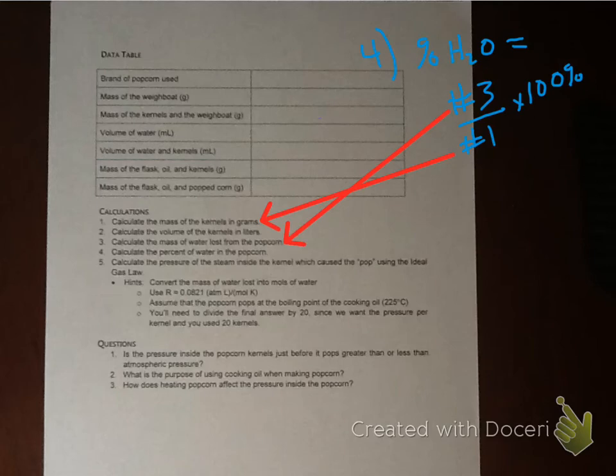So your next calculation is to calculate the percent of water in the popcorn. And what I've done is set up this equation, which shows you that it's the answer you obtained in number three divided by the answer you obtained in number one times 100%. If you analyze this, in number three is the actual mass of water lost from the popcorn. In number one is the mass of the kernels in grams. So this was the total amount of popcorn kernels that you had before you popped them. So it was the corn and the water. That was what you calculated in number one. And number three is you've calculated how much water was lost. So it's the mass of the water divided by the mass of the unpopped popcorn. That will give you your percent H2O once you multiply that by 100%.